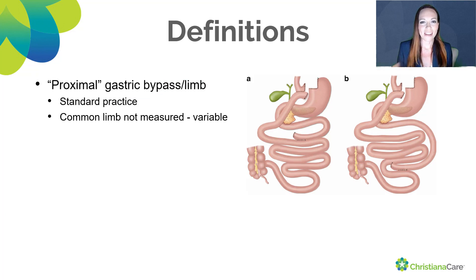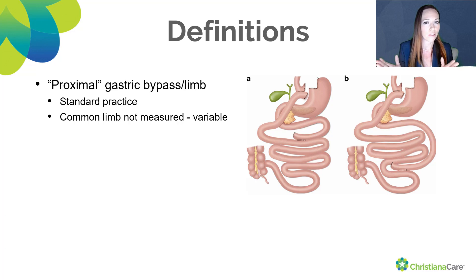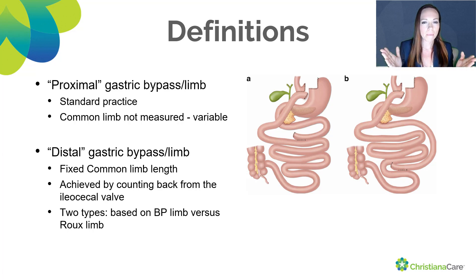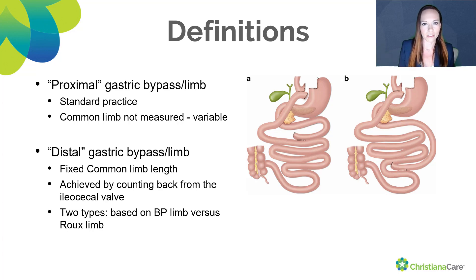The standard gastric bypass is otherwise known as the proximal gastric bypass. That is when the Roux limb is measured out, the biliopancreatic limb is measured out, and the common channel is whatever happens to be left over and can be quite variable. This is in contrast to the distal gastric bypass, where you measure back from the ileocecal valve, creating a fixed common channel length. You can see these two different bypasses contrasted here in the two images — A being the proximal, B being the distal.